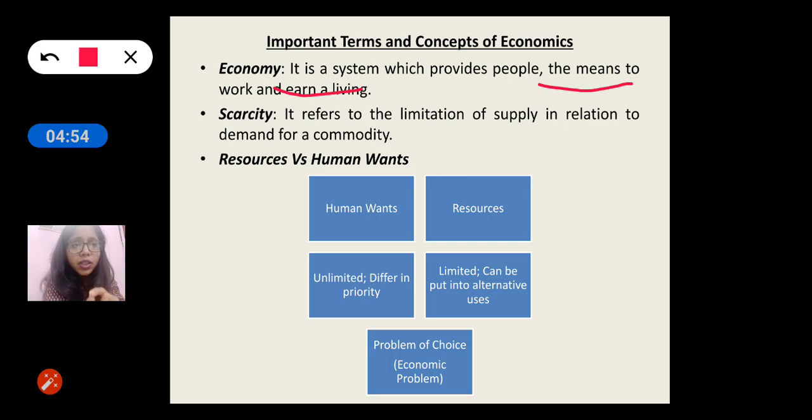Now let's come to the next point, which is resources versus human wants. Let's see the first box, human wants. Human wants have two characteristics. One, human wants are unlimited. Our desires are unlimited. Today I told my mom I want a cycle. Tomorrow I told my mom I want a scooty. Day after tomorrow I told my mom I want a car. So our desires, our wants are expanding exponentially. Desires never end. That is number one characteristic of wants. Number two, they differ in priority. In a sense that some wants are very urgent. I want it right now. But some wants can be postponed.